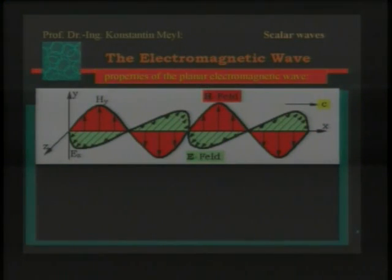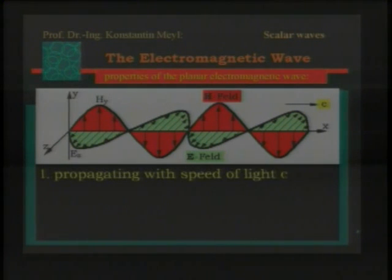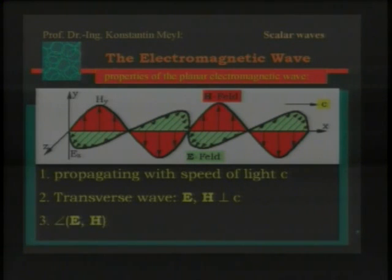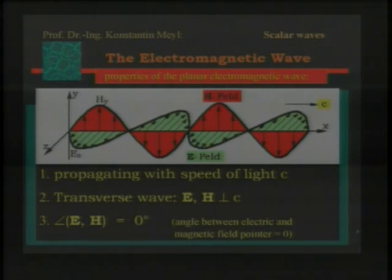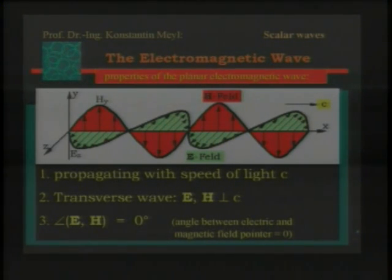There is an effectiveness of scalar waves on biological systems — that's clear. Let's have a look at the wave. The electromagnetic wave is very famous; the properties are well known. You see that this wave propagates at the speed of light. It is a transverse wave, so the field pointers are perpendicular to the direction of propagation.